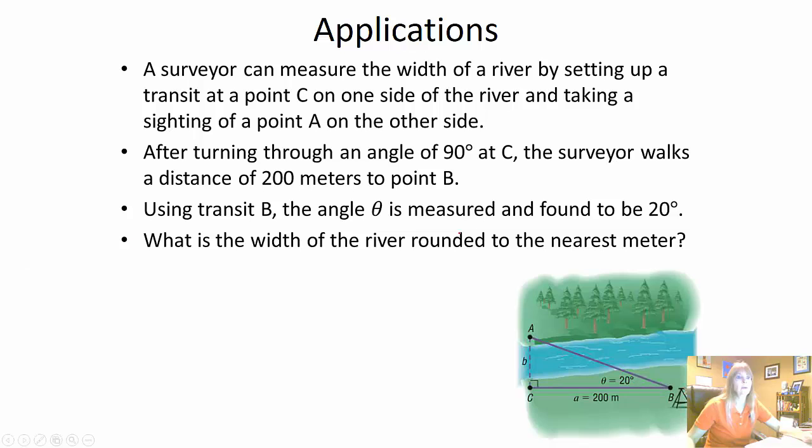My next example is an application. Says a surveyor can measure the width of a river by setting up a transit point C on one side of the river and taking a sighting of a point A on the other side. So trying to figure out this distance. Says after turning through an angle of 90 degrees right there, the surveyor walks 200 meters to this particular point B and this angle here to the point A is an angle of 20 degrees. So what is the width of the river rounded to the nearest meter?